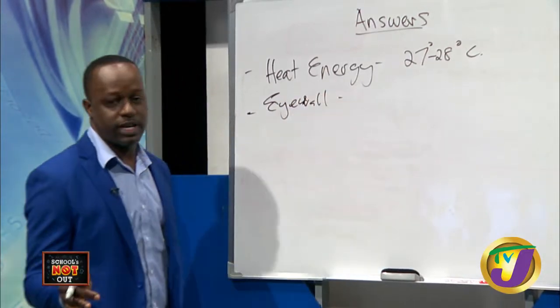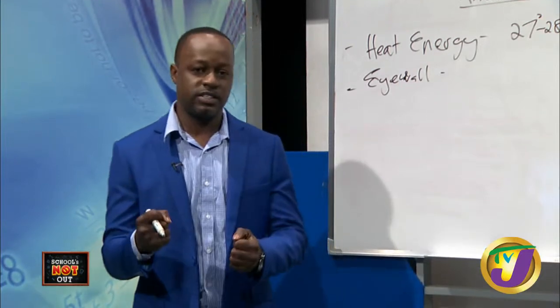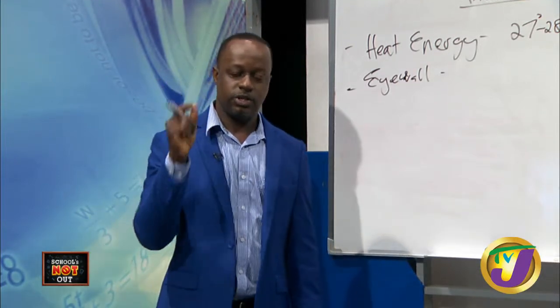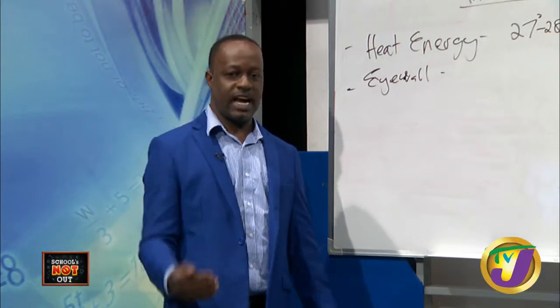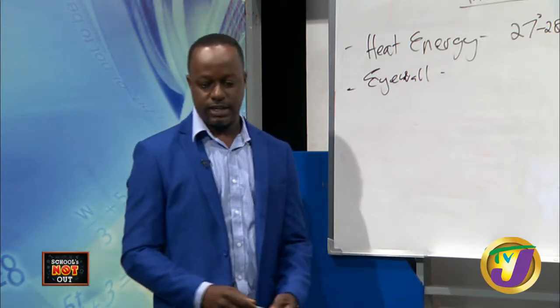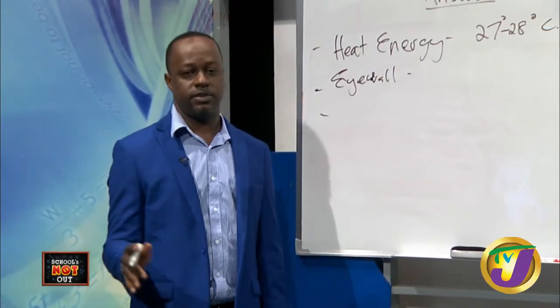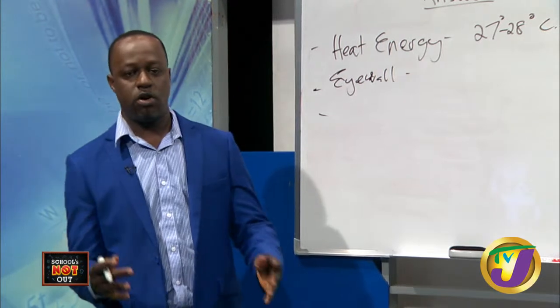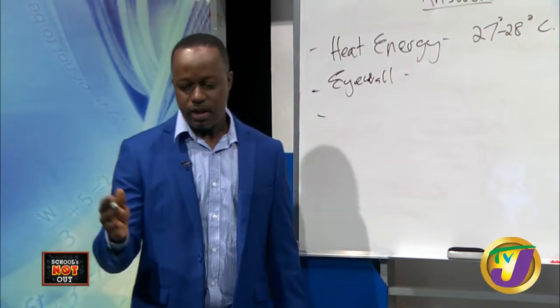The highest winds are found just around the eye in the eyewall - this is where hurricane hunters fly and test the winds to determine the hurricane's category. When does the Atlantic hurricane season peak? For Jamaica it's around September 12 or 13; for the entire Atlantic Ocean the average is between August and October.